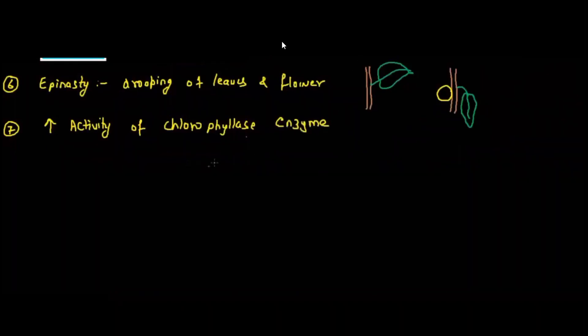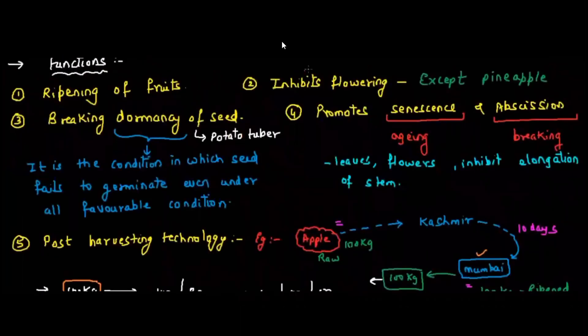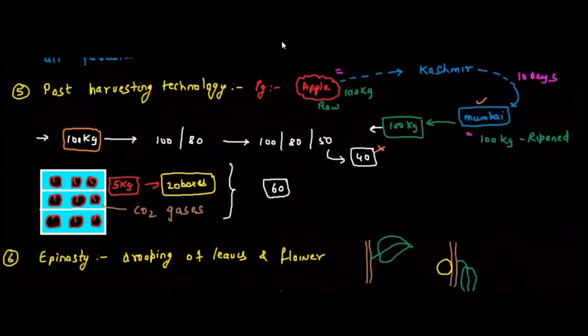Ethylene increases the activity of chlorophyllase enzyme. What is the role of chlorophyllase? It is that enzyme that will de-green or help in removing the chlorophyll. Banana which is yellow in color, initially it is green. So that normal green color is converted into yellow color because of the chlorophyllase enzyme.